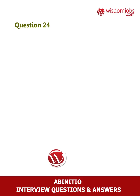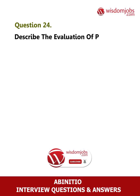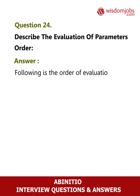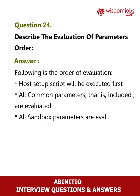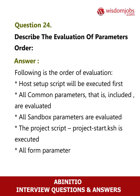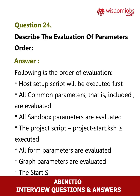Question 24: Describe the evaluation order of parameters. Answer: The following is the order of evaluation: the host setup script is executed first, then all common parameters (includes) are evaluated, then all sandbox parameters are evaluated, then the project script (project_start.ksh) is executed, then all form parameters are evaluated, then graph parameters are evaluated, and finally the start script of the graph is executed.